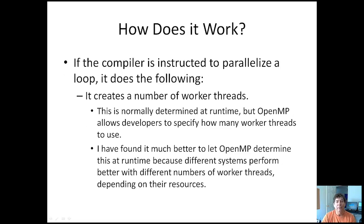So how does it work? If the compiler is instructed to parallelize a loop, it starts off by creating a number of worker threads. This is normally determined at runtime, but OpenMP will let developers specify how many worker threads to use. I have found this to be a bad idea, and I almost always let OpenMP determine how many worker threads to create at runtime, because different systems are going to perform differently depending on their resources. For instance, if you only have a dual-core and you specify four worker threads, it will actually not be as effective as letting OpenMP create only two worker threads.